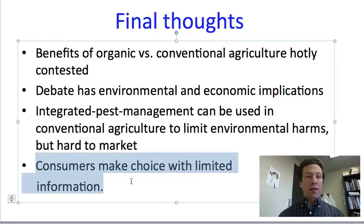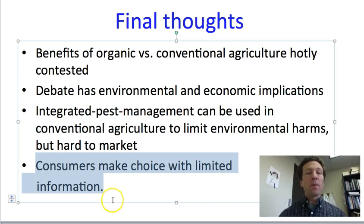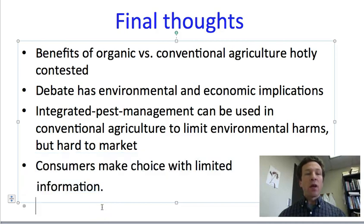Finally, you and I as consumers have to choose whether to buy organic or conventional produce with very little information to make that choice. There are all these hotly contested claims, but we know very little about the specifics of the environmental harms or the nutrients or the pesticide residues when we are choosing between the two. That makes our decisions ill-informed and hence not necessarily the best, but it's also hard to do much about that without having more information. In your upcoming assignment, I'm going to ask you to read a little bit about the two options and then to justify which option you think is better in some situations.